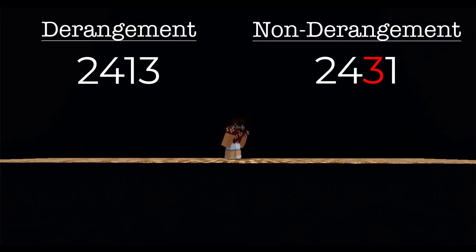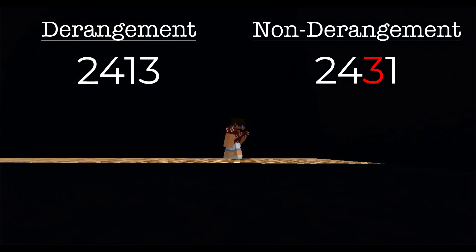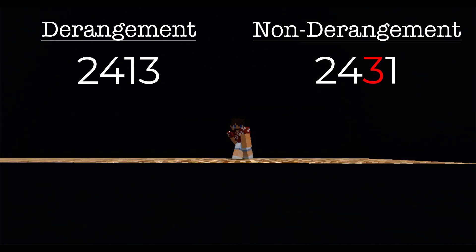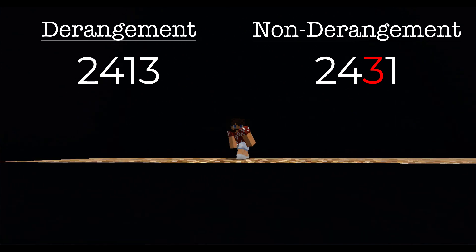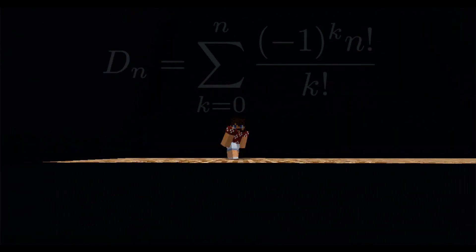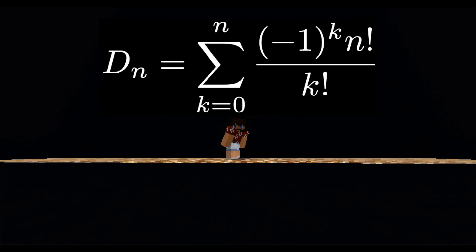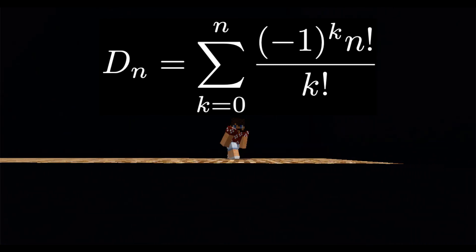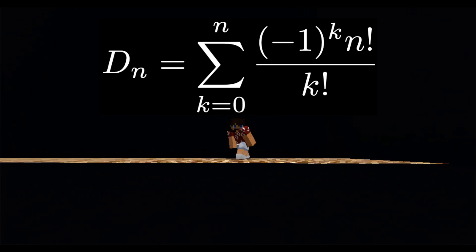But 2, 4, 3, 1 is not a derangement because 3 is in position 3. You'll learn in combinatorics that the number of derangements is counted by the sum from k equals 0 to n of negative 1 to the k times n factorial over k factorial.